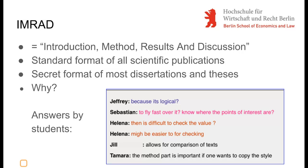By the same token, such a structure is used to check the validity and relevance of the research. It makes it easier to compare, which is particularly important when there is a lot of research and a lot of results — which is the case today in almost all areas of science. And lastly, it helps if you want to learn from those who did similar research before you. You might like to actually copy their approach, and then it is helpful not to have to look around a lot or to have to guess.